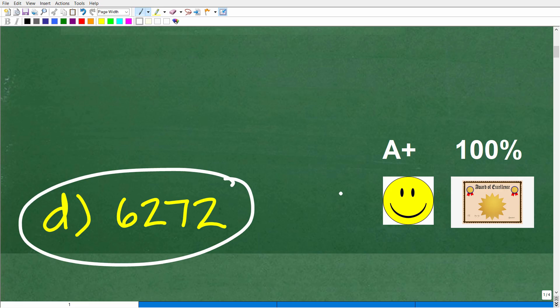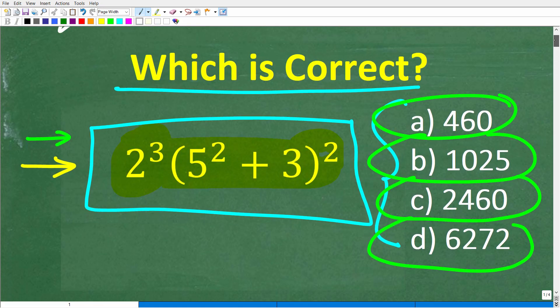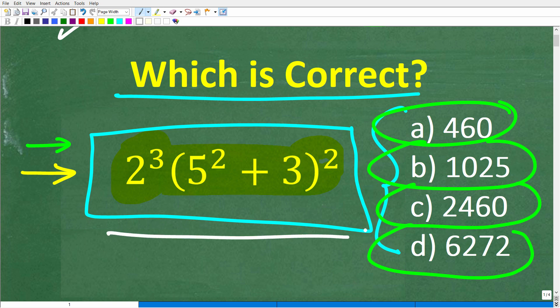Now, if you got this right, you definitely get a happy face and a plus, a 100% and a certificate of excellence for being a certified professional expert in the area of basic mathematics. So congratulations. Now, again, I wanted you to do this problem without a calculator. So if you got the right answer without using a calculator, that tells me that you know how to evaluate powers, you know how to multiply, you know how to add, and you know a thing or two about the order of operations. So that is outstanding.